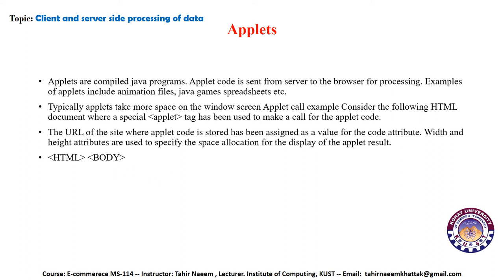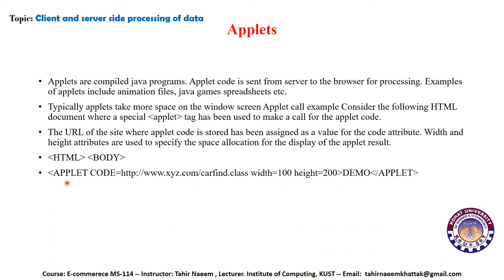Here is the code example: within the HTML body, the applet tag is included, calling code from www.xyz.com/CarFinder.class. You can also call from another URL such as ftp.www.caz.edu with any file stored on a server. Width and height specify how much space the applet should occupy. Here I have enclosed and closed the applet tag, body, and HTML tags.